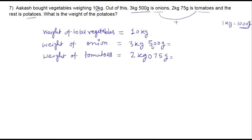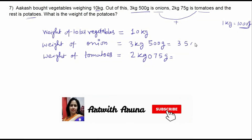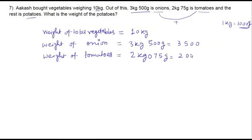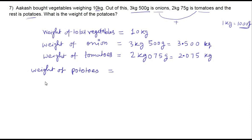Write numbers in sequence: 3500 and 2075. Since there are three zeros in 1000, count three digits from the right and put the decimal point: 3 kg 500 gram becomes 3.500 kg and 2 kg 75 gram becomes 2.075 kg. Weight of potatoes equals 10 kg minus (3.500 kg plus 2.075 kg). First add: 3.500 plus 2.075. 0 plus 5 is 5, 0 plus 7 is 7, 5 plus 0 is 5, 3 plus 2 is 5. Total is 5.575 kg.